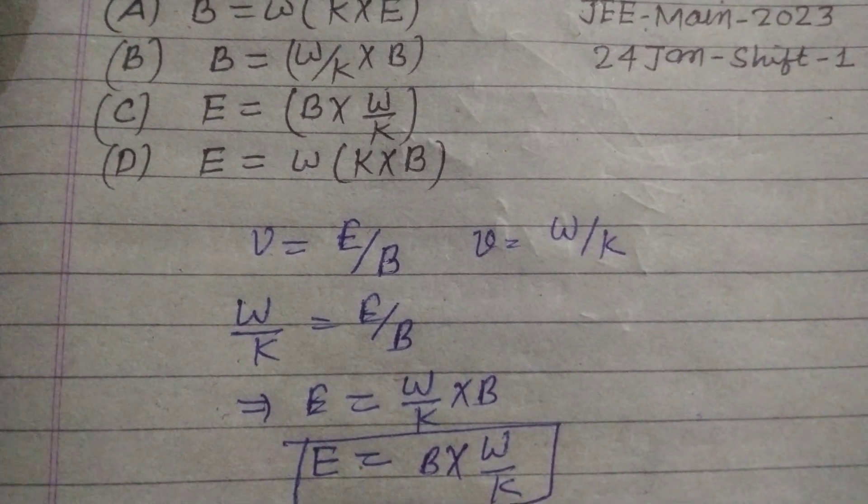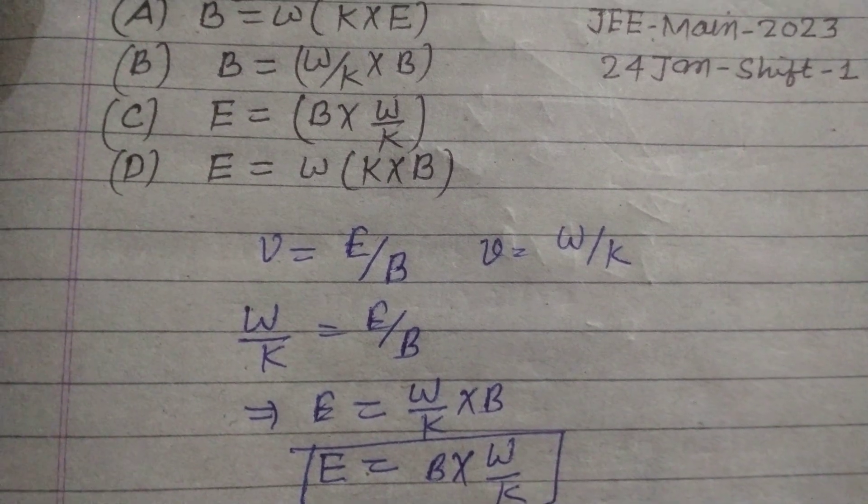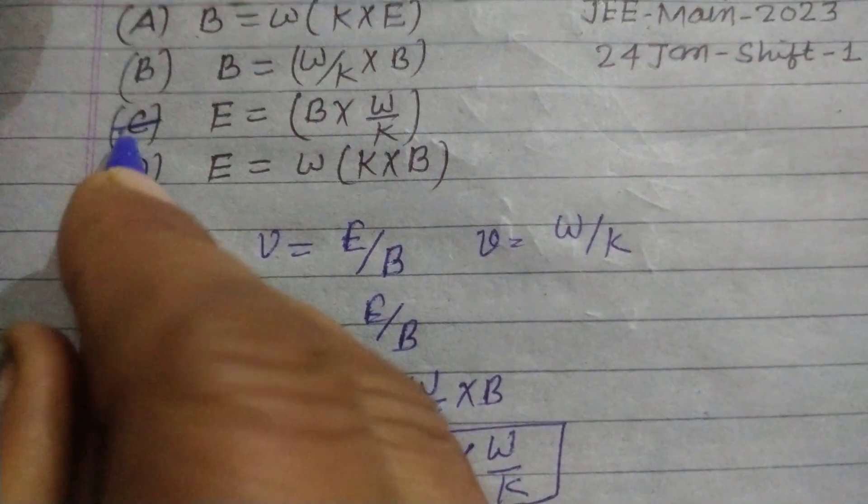So this is the relation between E, B, W and K. This is found in option C of the question.